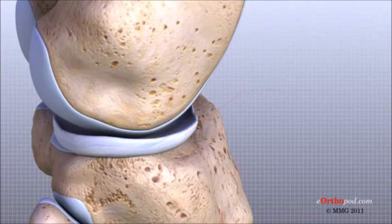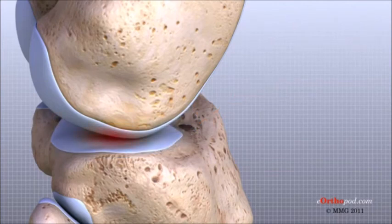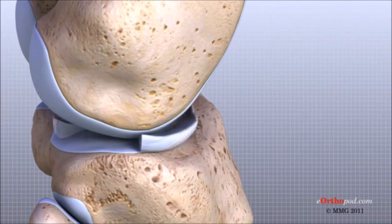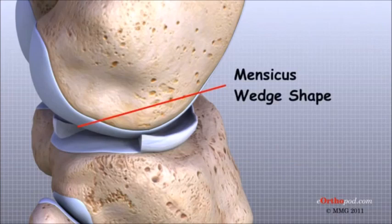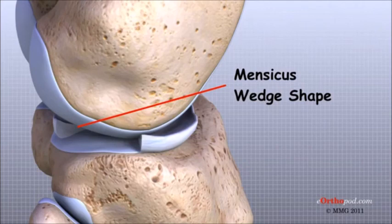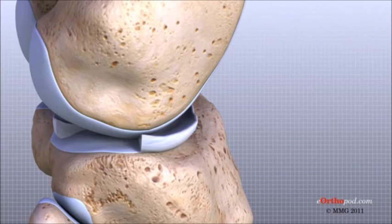Weight distribution by the menisci is important because it protects the articular cartilage on the ends of the bones from excessive forces. Without the menisci, the concentration of force into a small area on the articular cartilage can damage the surface, leading to degeneration over time. In addition to protecting the articular cartilage, the menisci help the ligaments with stability of the knee. The menisci are thicker around the outside, and this thickness helps keep the round femur from rolling on the flat tibia. The menisci convert the tibial surface into a shallow socket, which is more stable and more efficient at transmitting weight from the upper body. The menisci enhance the stability of the knee and protect the articular cartilage from excessive concentration of force.